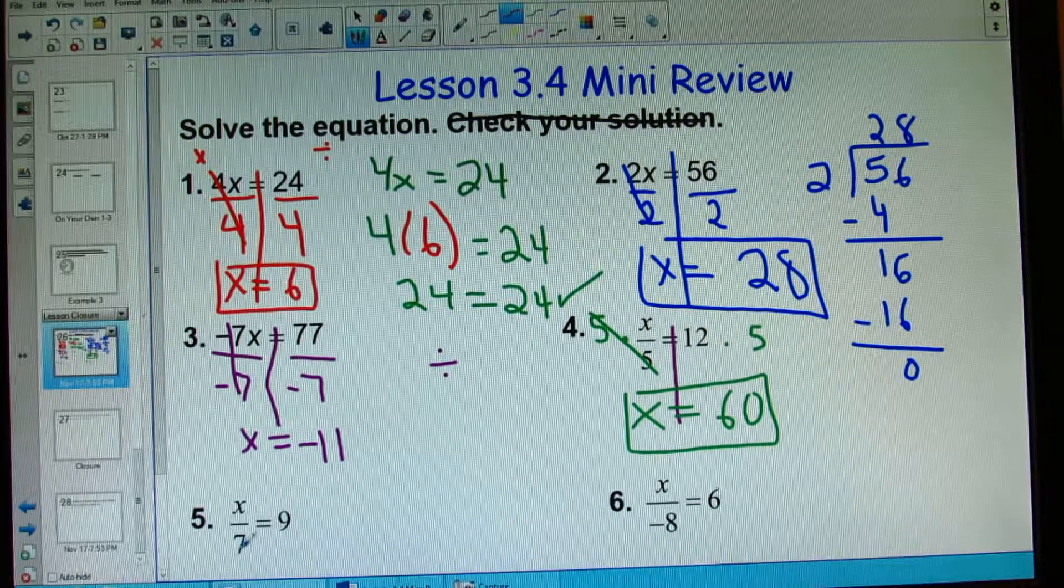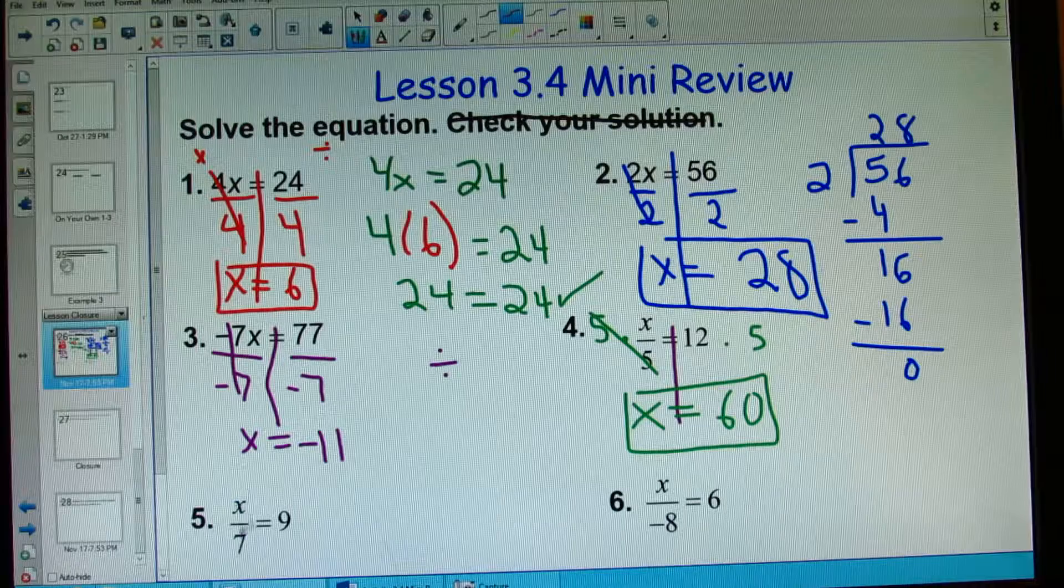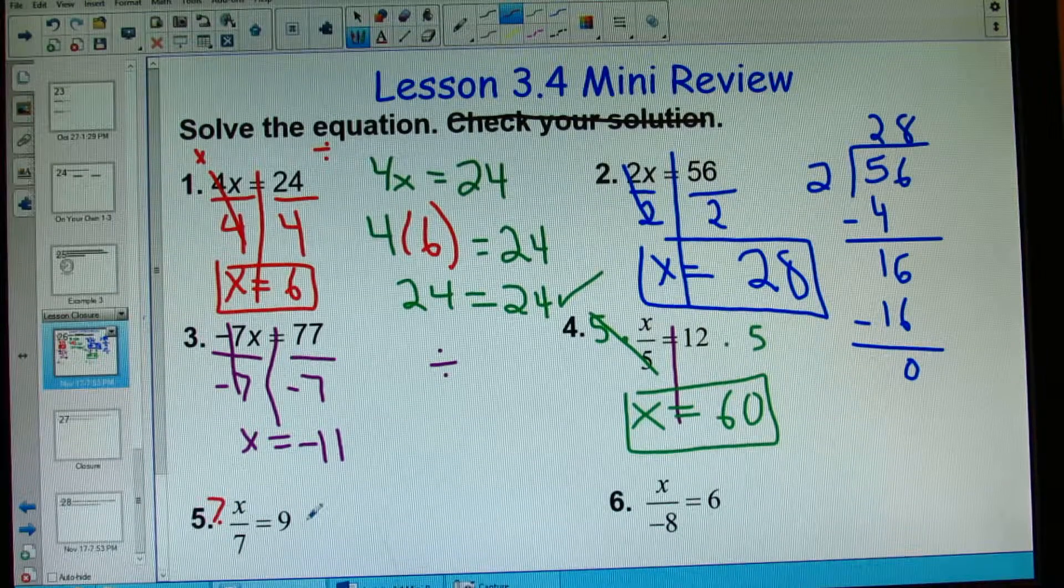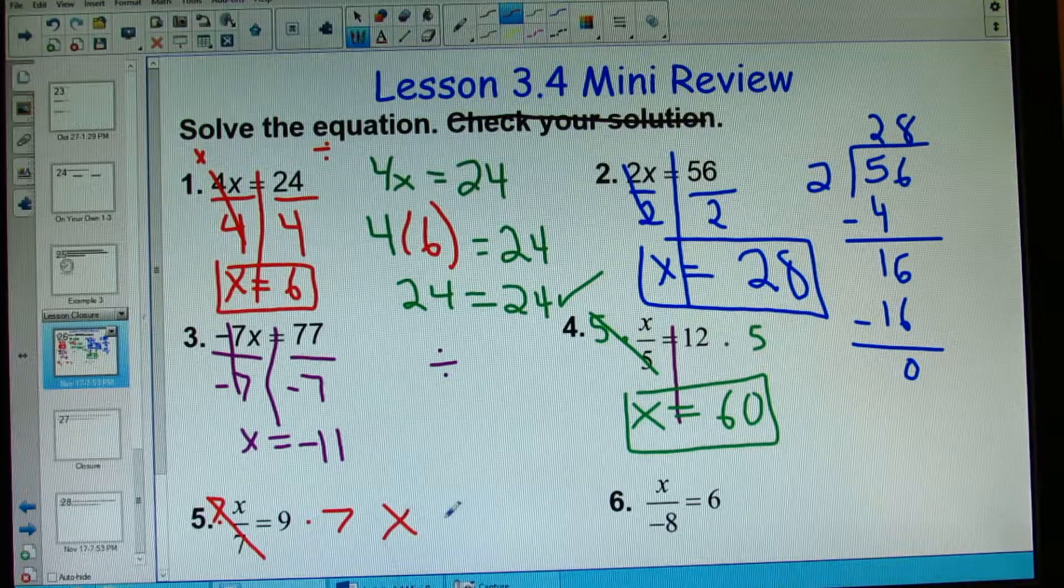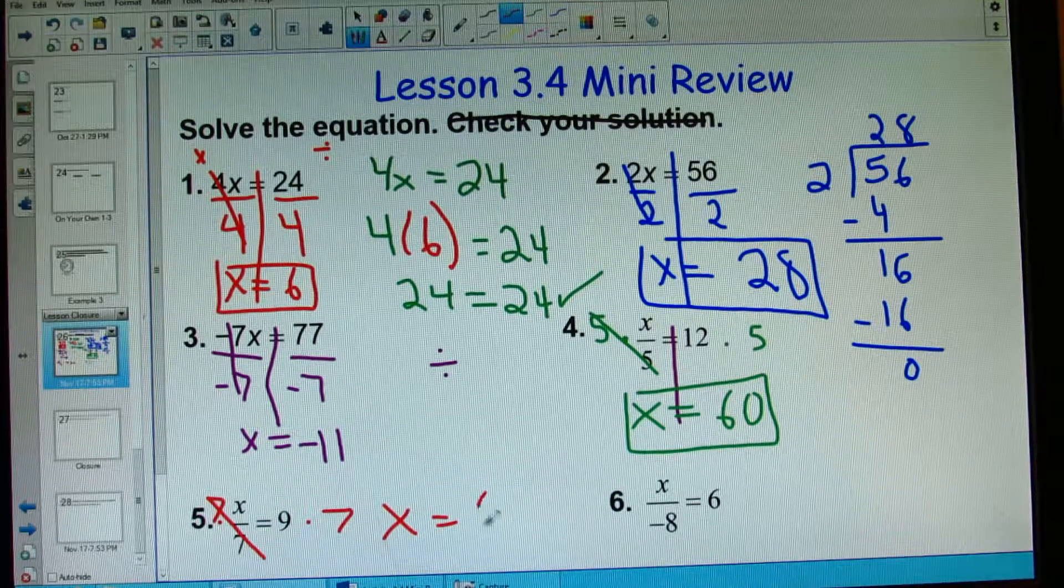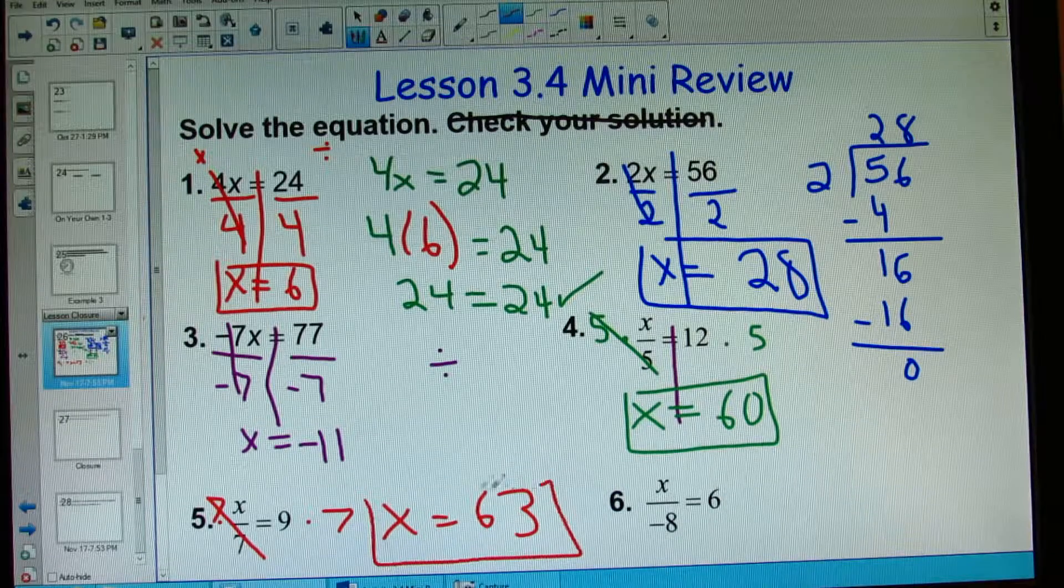x divided by 7 is 9. This is dividing. I'm going to need to multiply both sides by 7. My 7's will cross out and I will get x equals 9 times 7. Another multiplication fact you need to know. 63.